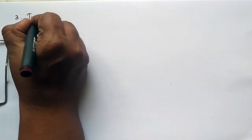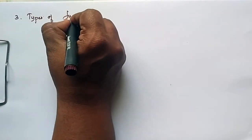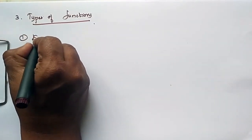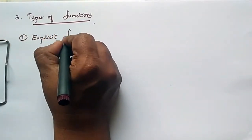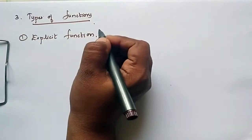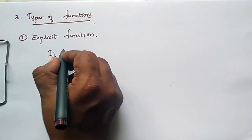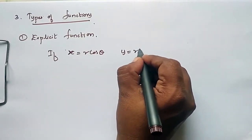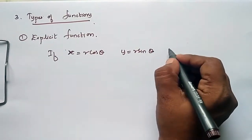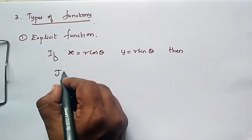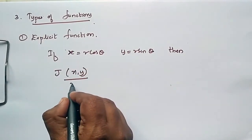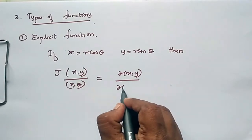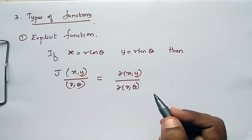Three: Types of functions. First one, explicit function. If x equals r cos θ and y equals r sin θ, then J of (x,y) by (r, θ) is equal to ∂(x,y)/∂(r, θ).